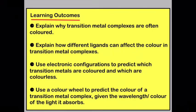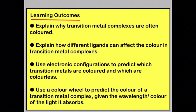By now you should be able to explain why transition metal complexes are often coloured, how different ligands can affect the colour in transition metal complexes, use electronic configurations to predict which transition metals are coloured and which are colourless, and use a colour wheel to predict the colour of a transition metal complex given either the wavelength or the colour of the light absorbed by the complex.